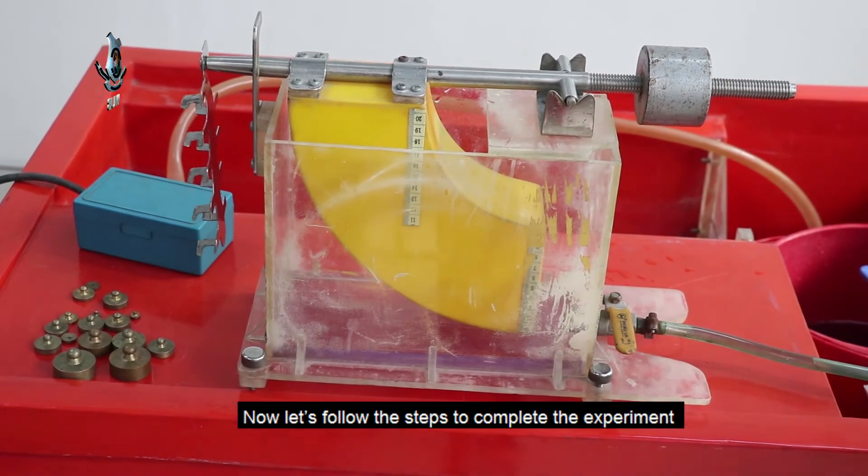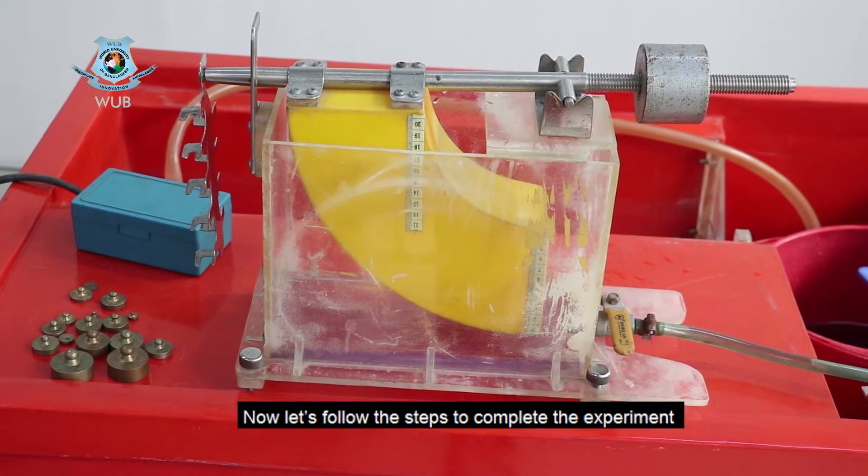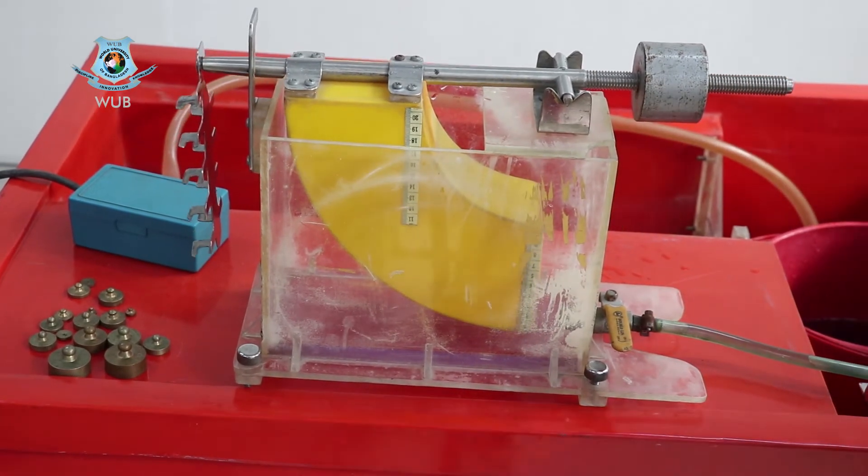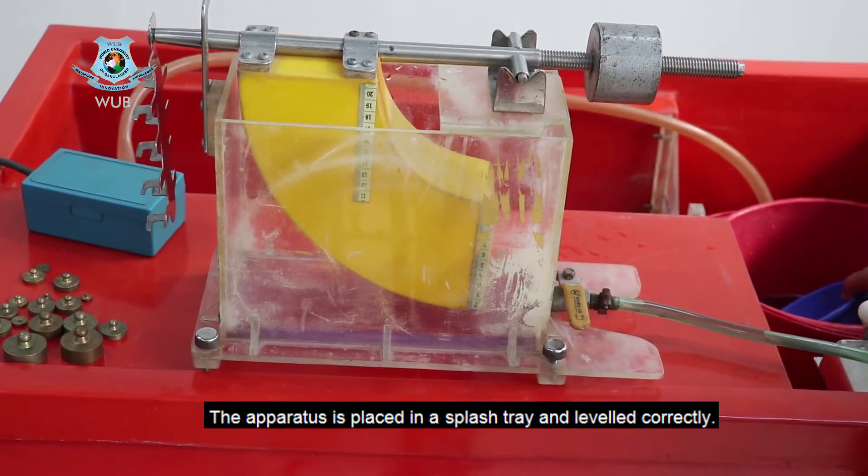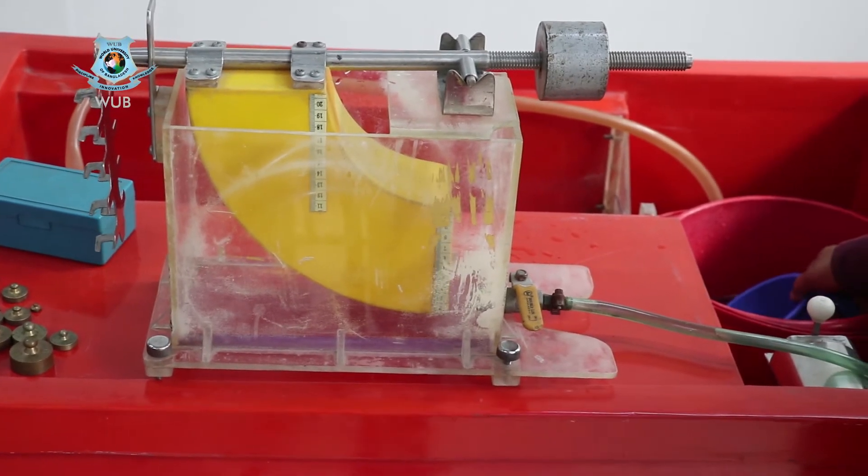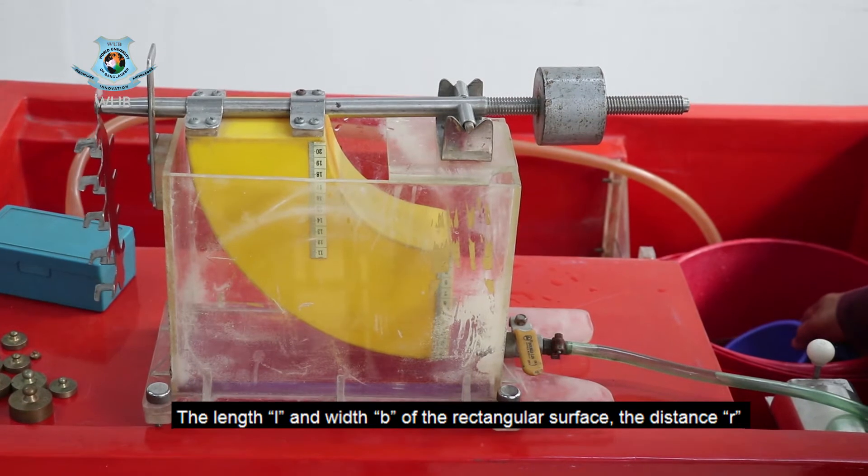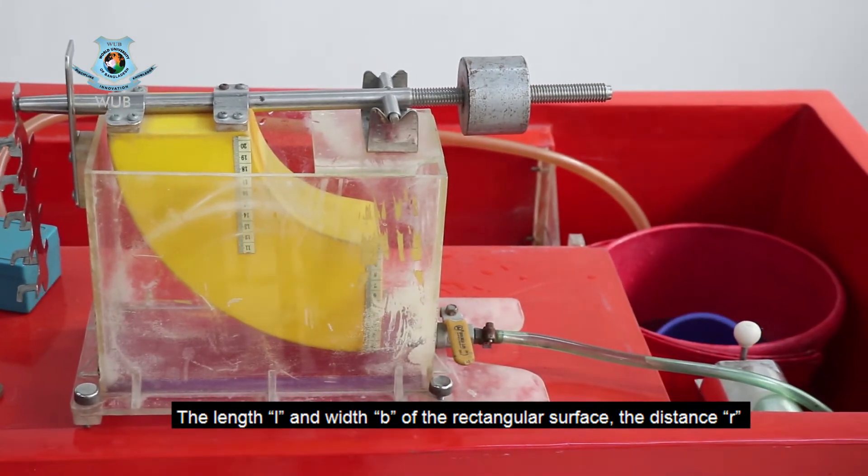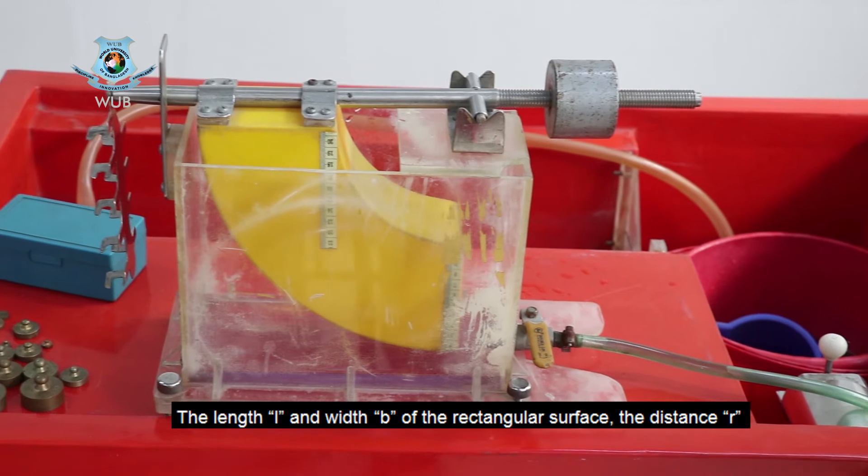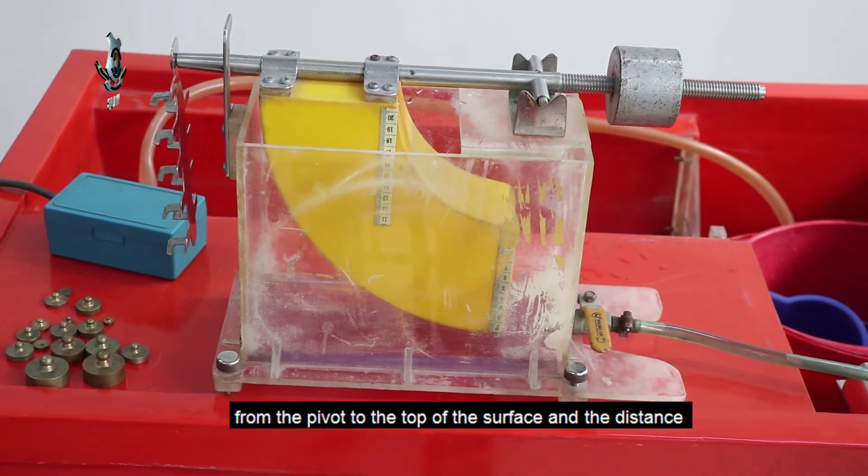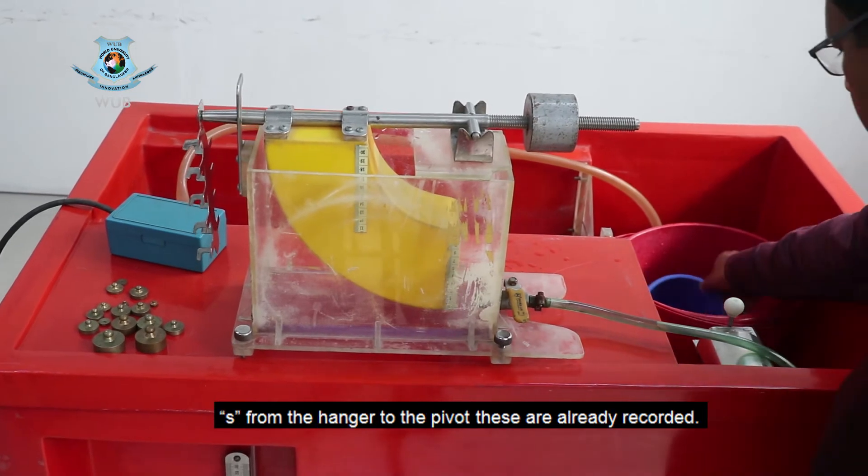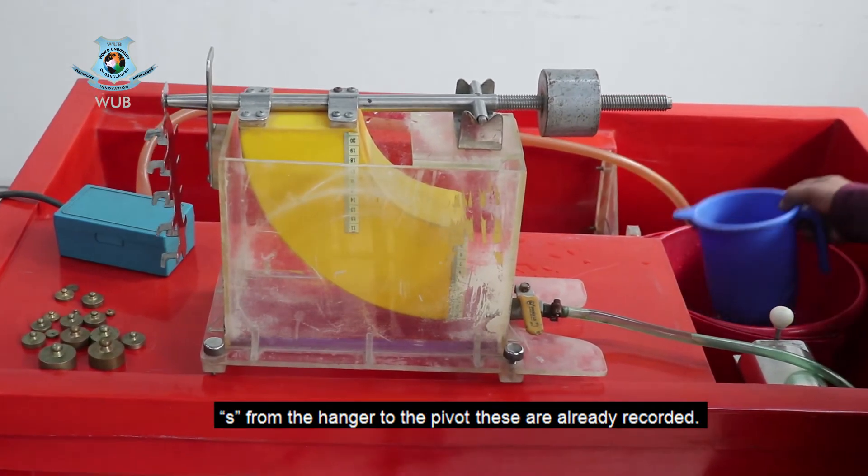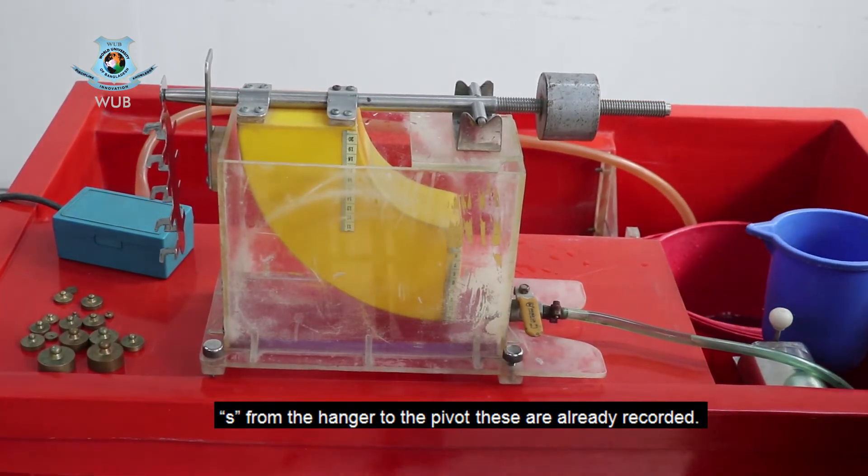Now let's follow the steps to complete the experiment. The apparatus is placed in a splash tray and leveled correctly. The length L and the width b of the rectangular surface and the distance r from the pivot to the top of the surface and the distance from the hanger to the pivot that is small z are already recorded.